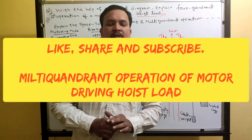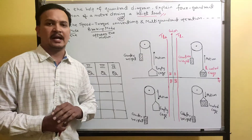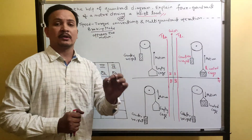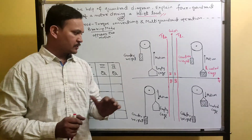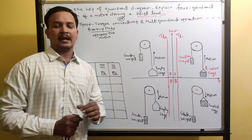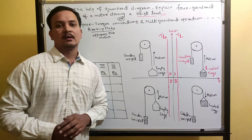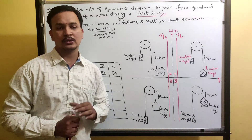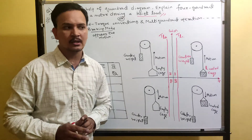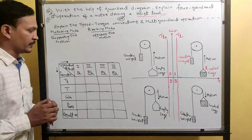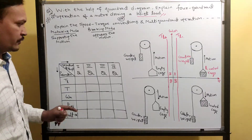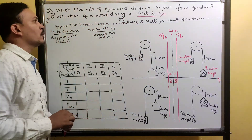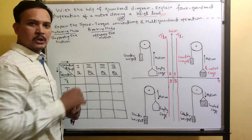Good evening, dear students. In this lecture I am going to explain the multi-quadrant operation of a motor driving a hoist load. This topic is useful for final year engineering students and final year diploma students of electrical and electronics branch. The university exam question reads: with the help of the quadrant diagram, explain four-quadrant operation of a motor driving a hoist load.